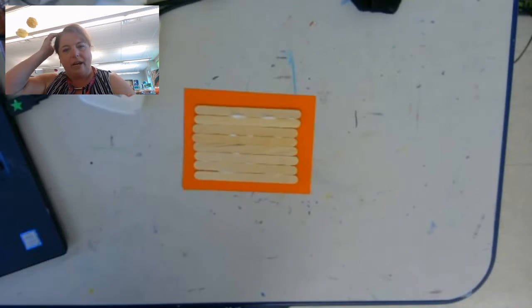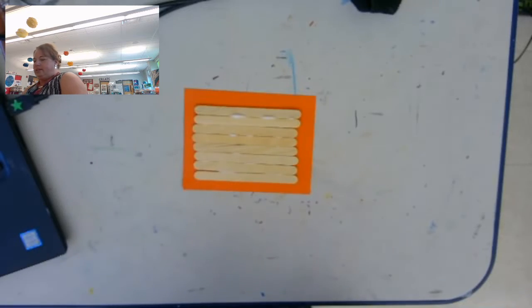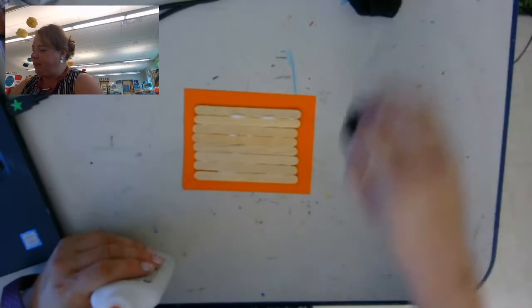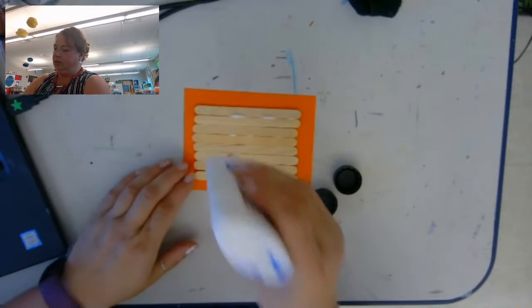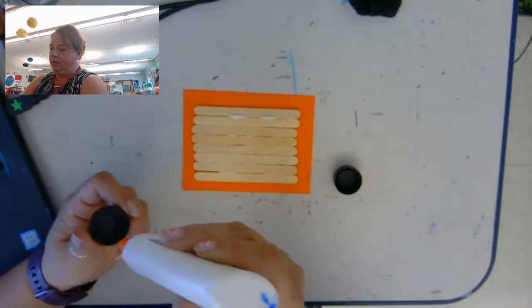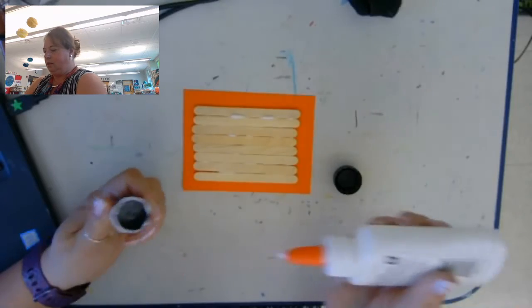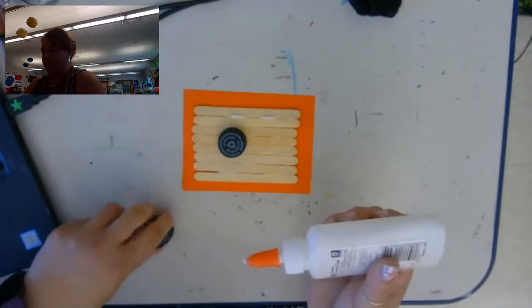So now I'm going to start picking out some objects to glue on. So I've got two bottle caps here and I'm going to use those, so I want to put some glue around the edge and stick those on.